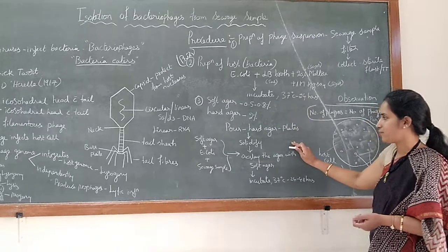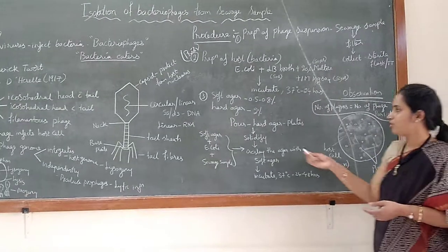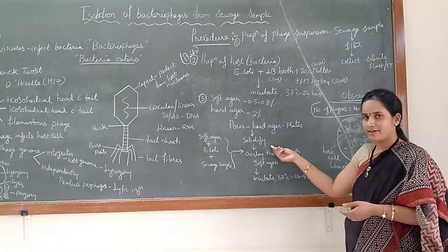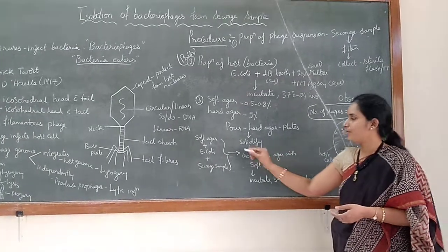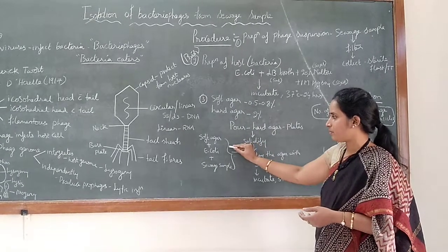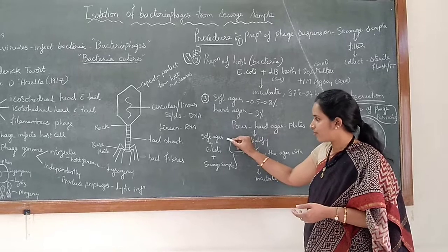How to go with the experiment? So first of all, we need to take the hard agar, pour it into the sterile petri plates, let it solidify. Then during solidification, you can go with this preparation where to the soft agar medium, E. coli culture...